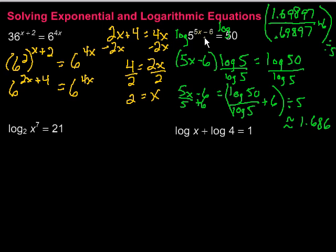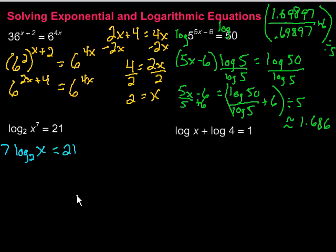For that one, we had to take the log of each side to get that x piece out of the exponent. Now let's take a look at another one — the lower left. In this case, there's already a log with that power sitting there. I can pull that 7 out front, giving me 7 times the log base 2 of x equals 21. Dividing by 7 on both sides, I have log base 2 of x equals 3.